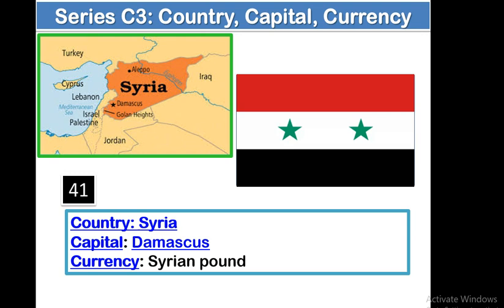In the eastern side, there is Iraq. And in the southern side, there is Jordan. Its boundary touches the Mediterranean Sea, so it is not a landlocked country. Jordan in the south is a landlocked country. An important fact: the river Euphrates runs through Syria.